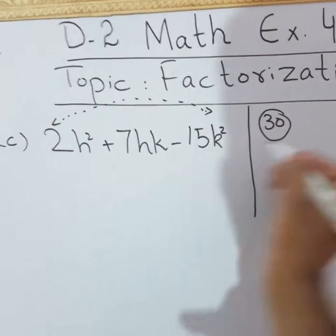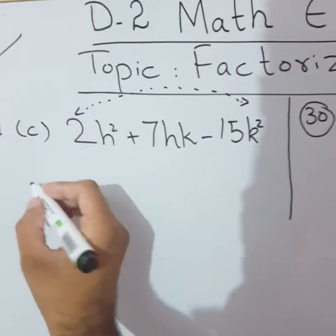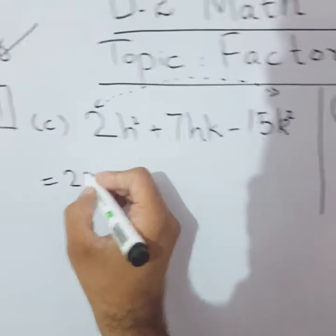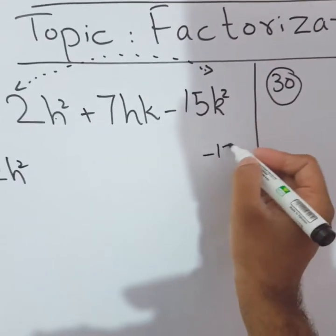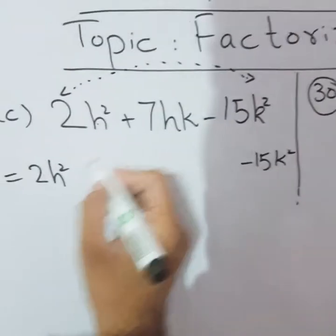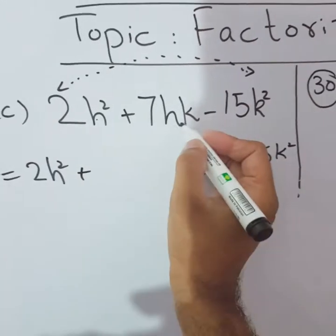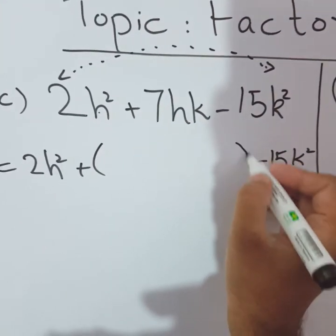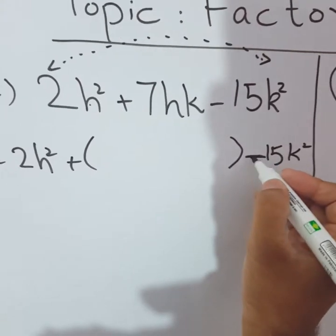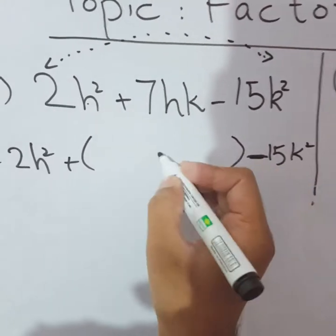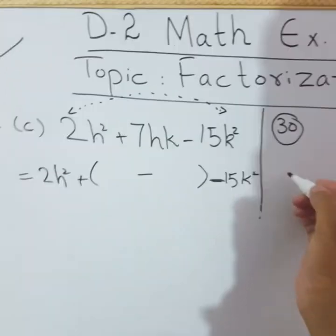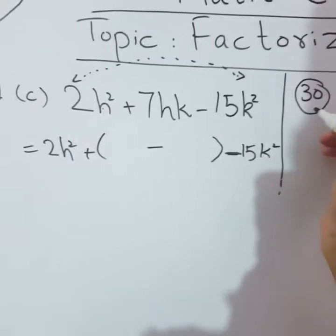I'll explain the purpose of writing 30 later. For now, write 2h² on the next line with an equals sign, then -15k². Also write the plus sign here. You won't write 7hk, instead leave space with an expanded bracket. The sign that is there, minus or plus, put it in the middle. There was minus, so I put minus in the middle.